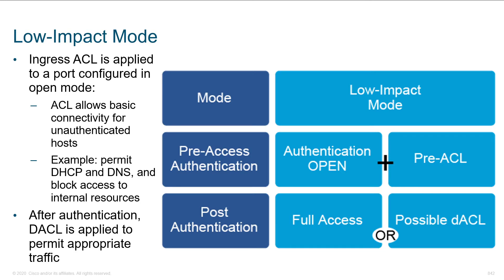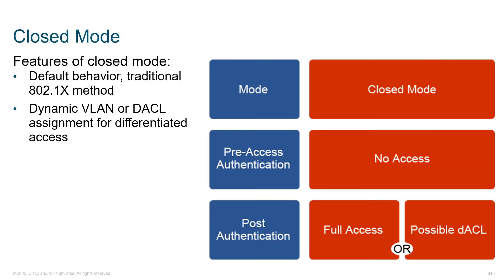With low impact mode, we take open authentication a little bit further. We'll have an ACL that allows basic connectivity — maybe just web browsing, but nothing like file transfer, remote desktop, or VNC. What can you do? DHCP, DNS, port 80, port 443 — but maybe that's really it. After you authenticate, you're granted a broader level of access by pushing down a downloadable ACL, which typically comes from the Identity Services Engine down to your switch or access point.